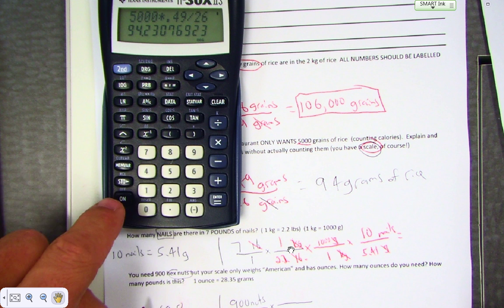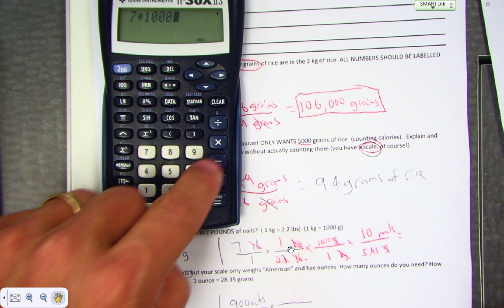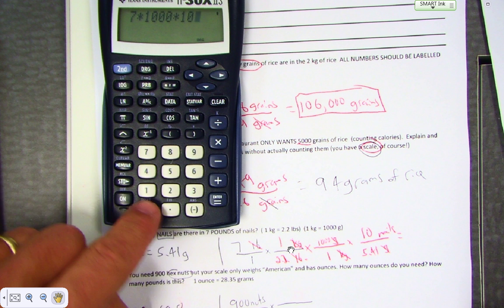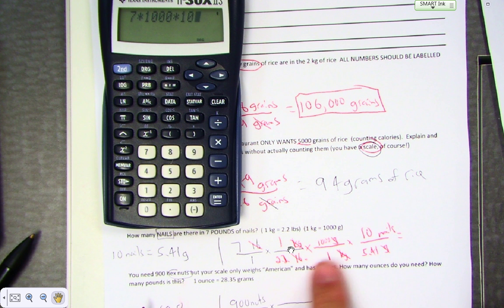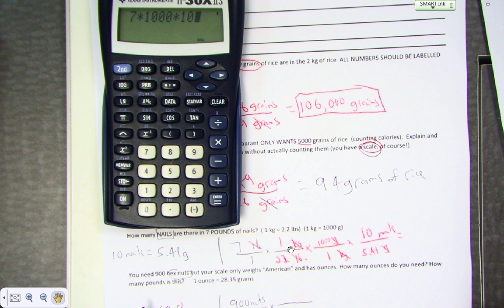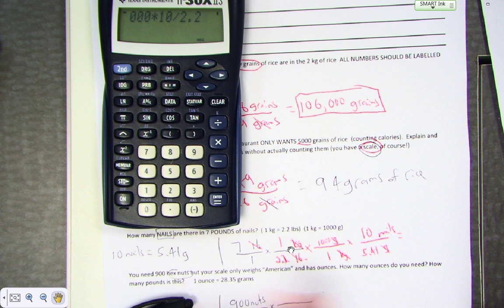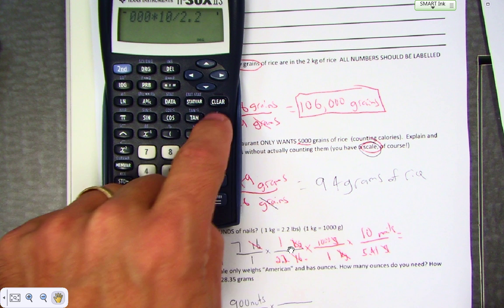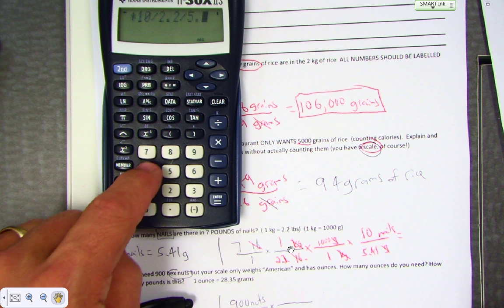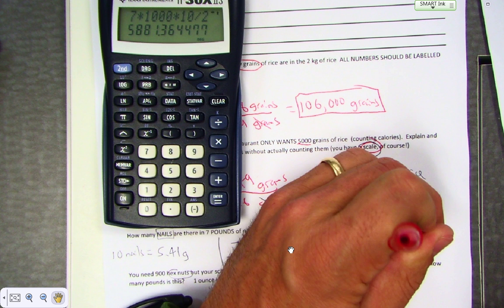Now what do I do? 7 times 1000 times 10, because those were all on top. Now I have two numbers on the bottom and I have to divide by both of them. This is a decimal point: divide by 2.2 and also divide by 5.41, and I will get 5,881 nails.